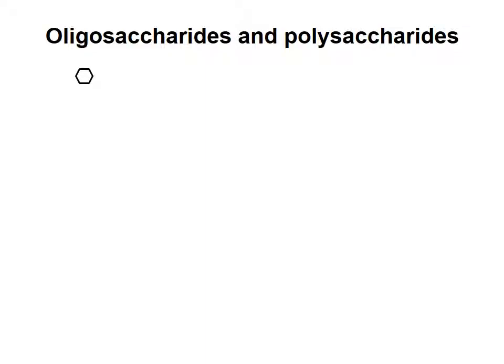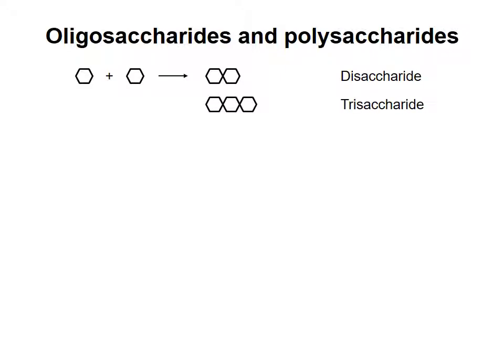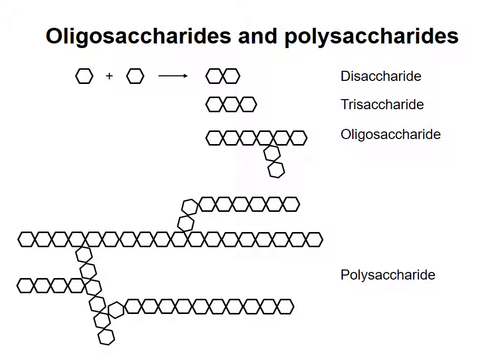In the last video we saw how two monosaccharides can be joined together to make a disaccharide. In the same way, additional monosaccharides may be added to make longer chains. Chains containing up to about 10 monosaccharide groups are called oligosaccharides, and longer chains are called polysaccharides. The chains can be linear or branched. We will now look at a few important polysaccharides.